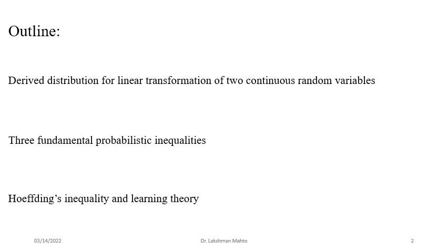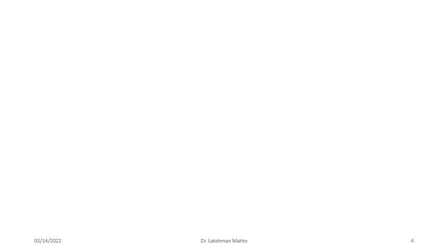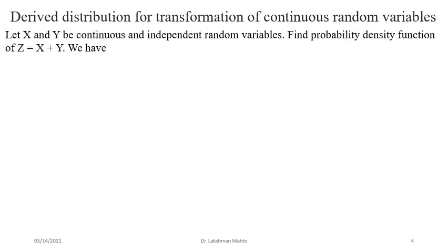Coming to the first segment as a recap of last class: we were discussing convolution of continuous signals. Suppose X and Y are two continuous and independent random variables - we know the distribution of X and also the distribution of Y. Now we define a new function Z = X + Y, so Z is a derived random variable generated from X and Y by summing them. We need to find the derived distribution of Z, which is the convolution of the distributions of X and Y.